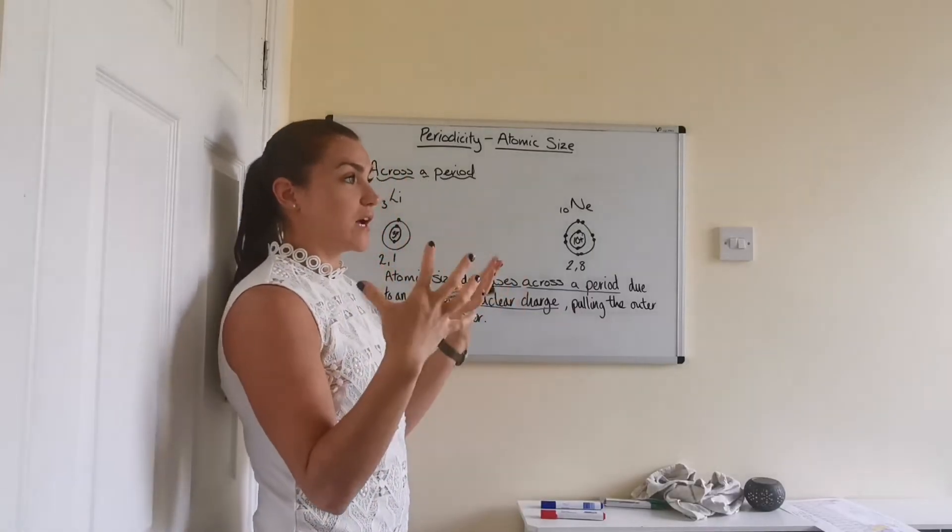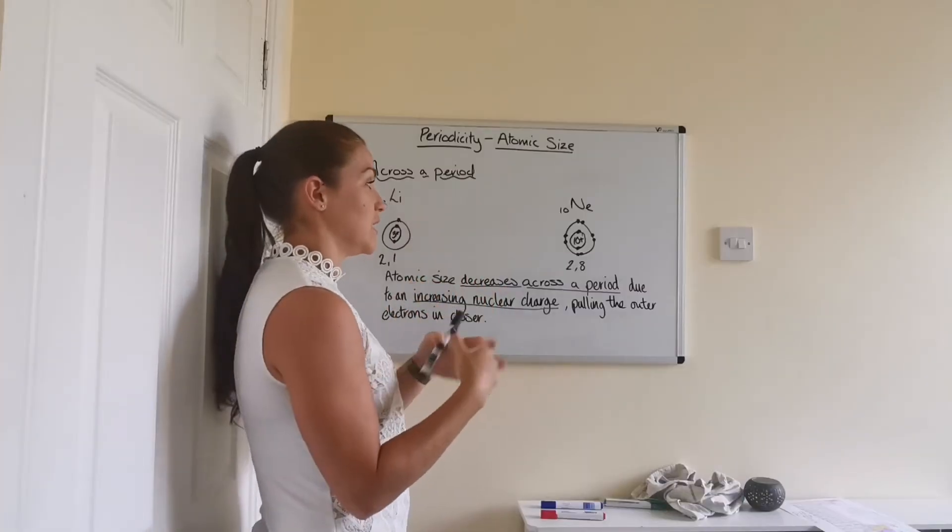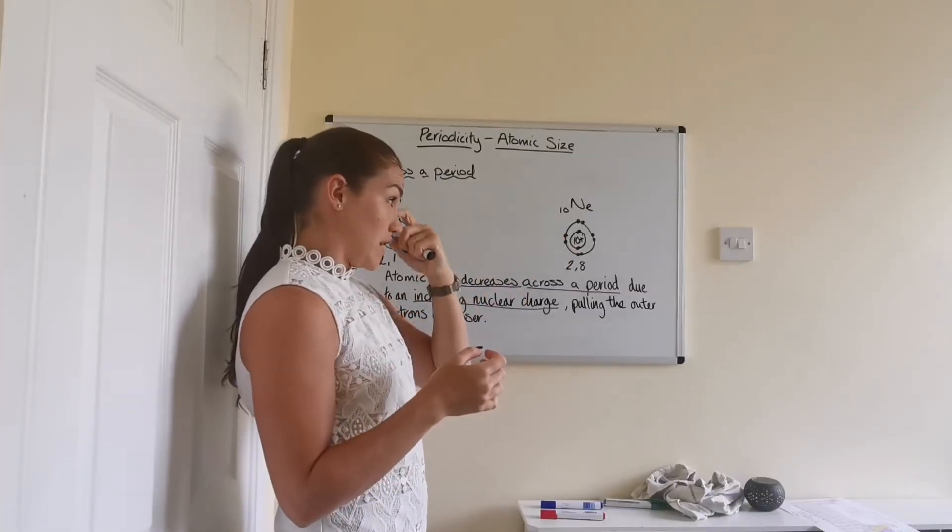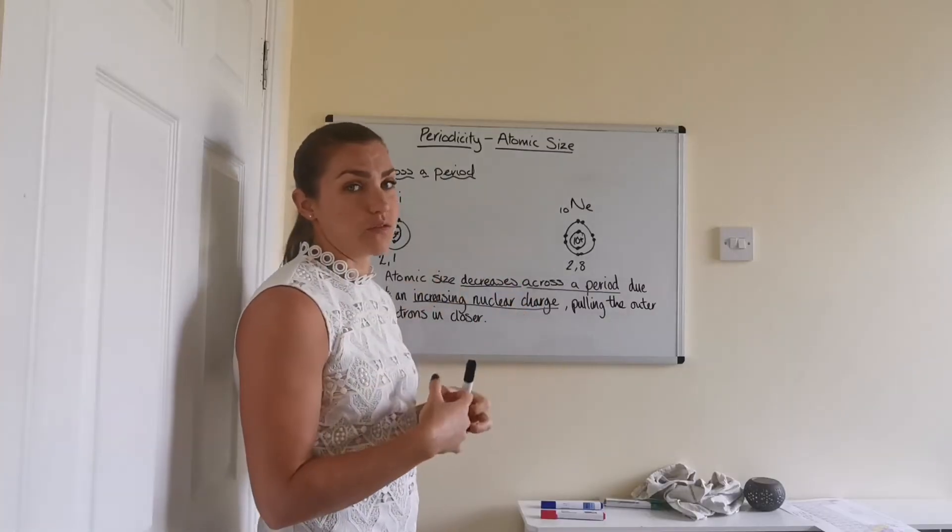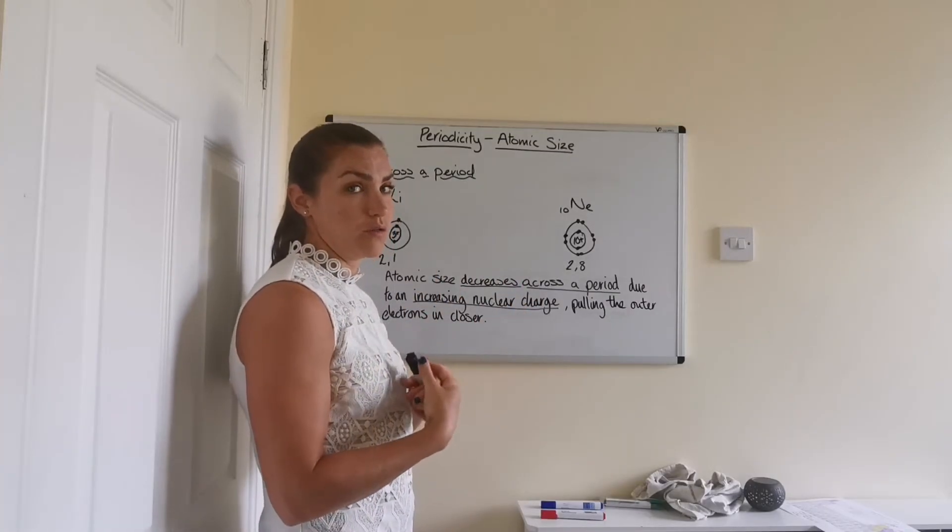So you really just want to try and start thinking about atoms like magnets. The big positive charge in the middle attracting the negative charges on the outside. And the bigger that attraction in the middle is, the closer those negative electrons will be pulled in, which will make it smaller.